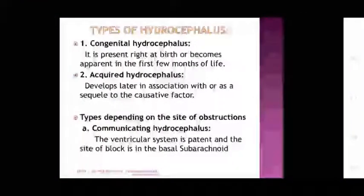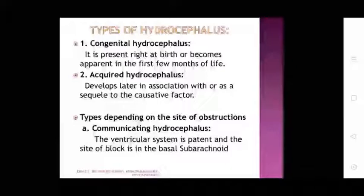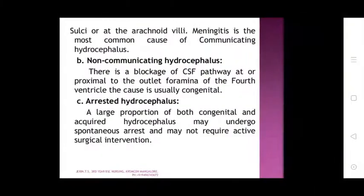Types of hydrocephalus: Congenital hydrocephalus is present at birth and becomes apparent in the first few months of life. Acquired hydrocephalus develops later in association with a causative factor. Based on the site of block: communicating hydrocephalus occurs when the ventricular system is patent and the site of block is in the basal subarachnoid space or the arachnoid villi. Meningitis is the most common cause of communicating hydrocephalus.